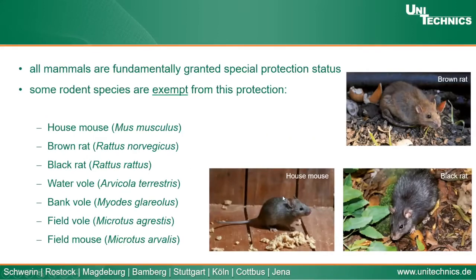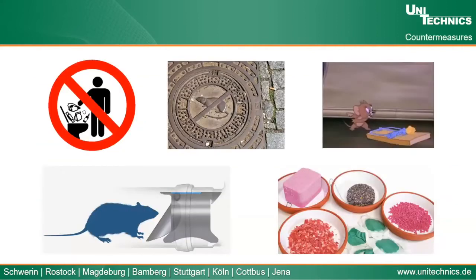Actually, all mammals are fundamentally granted special protection status in Germany, which means they're not allowed to be controlled. But some rodent species are exempt from this protection. In total there are seven species: the house mouse, brown rat, black rat, water vole, bank vole, field vole, and field mouse. The brown rat is the most commonly seen rat in our sewer systems. All seven of these species are allowed to be controlled in Germany.